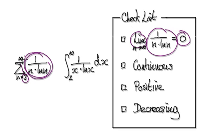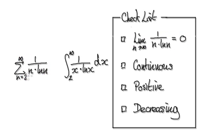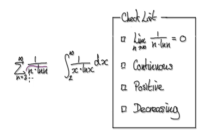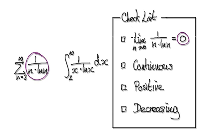As n moves from 2 to infinity, make sure this whole thing heads towards 0. As n moves from 2 to infinity, the denominator is just going to get bigger and bigger. So 1 divided by something that keeps on getting bigger and bigger — eventually this whole thing will head towards 0. So now we know that the limit of this equals 0.